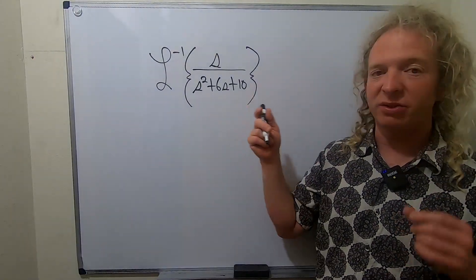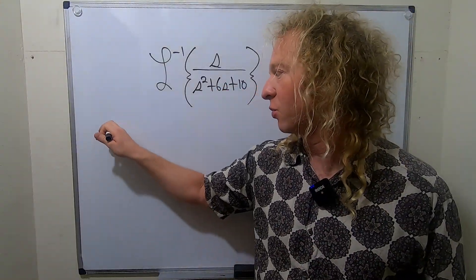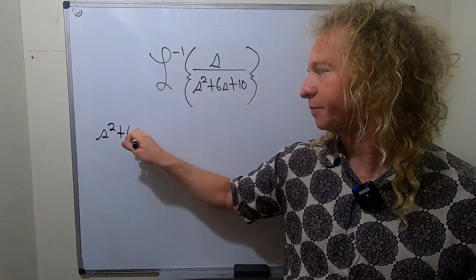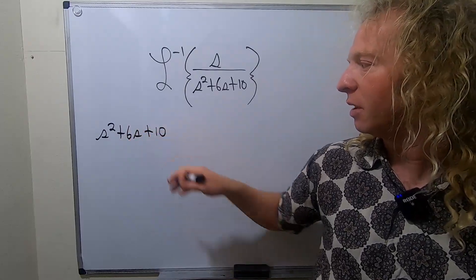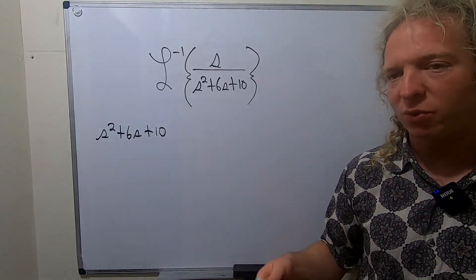So the next thing to do is to complete the square. Let's go ahead and take the bottom piece and rewrite it. So we have s squared plus 6s plus 10. So to complete the square, we'll take the number that's here and we'll divide it by 2 and then we'll square it.